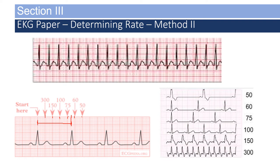Let's try that on the strip at the top of the screen. Find the start point — it has no number — then go to the next box: that's 300, and the next is 150. So this R-wave falls directly between 300 and 150. Between 300 and 150 is a difference of 150 beats; divide that in half to get the mean of 75. Add 75 to 150 and you get 225. You can say with reasonable certainty that this rhythm is approximately 225 beats per minute.